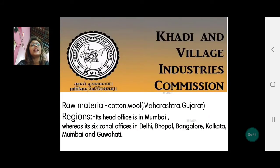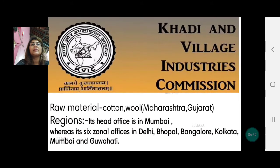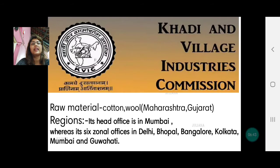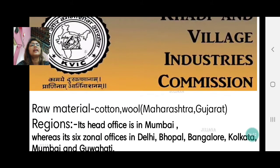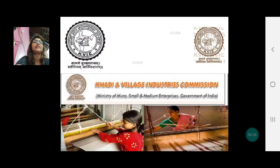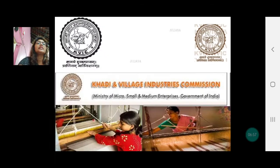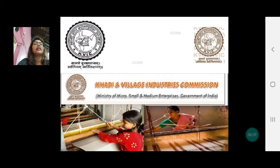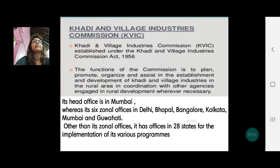The next one is the Khadi and Village Industrial Commission. The raw material is khadi — that is cotton and wool — from Maharashtra and Gujarat, which are the major producers of cotton. More information about Khadi and village industries is provided for those who wish to go through it.